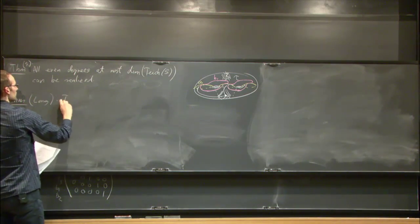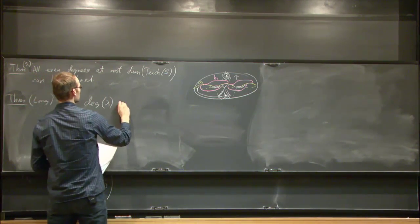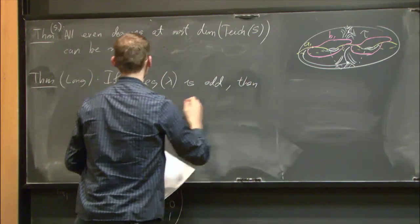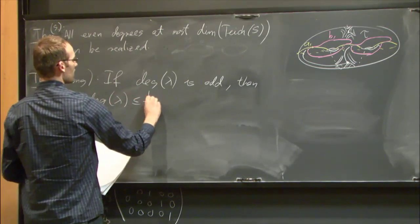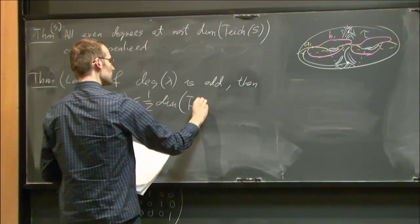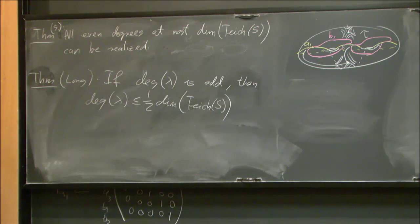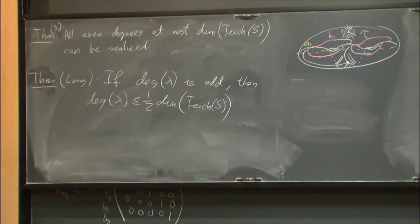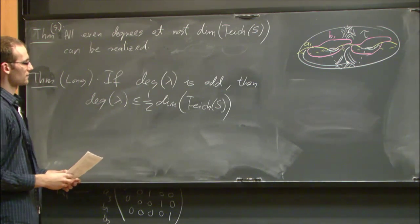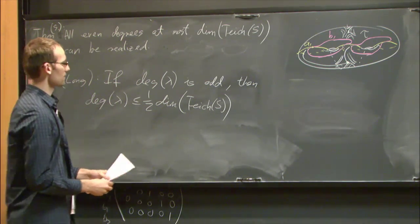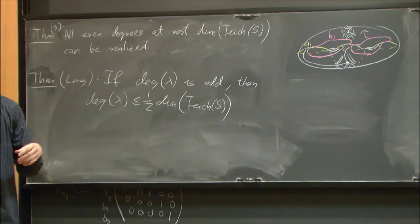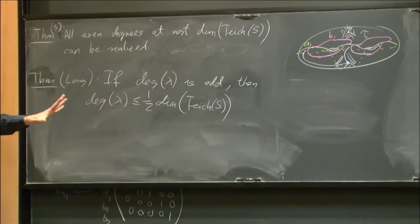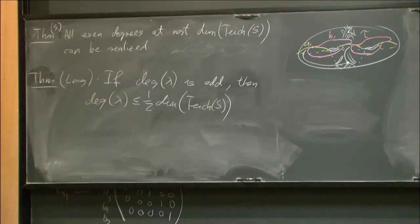A result due to Long says that if the degree of lambda is odd, then the degree is at most half the dimension of the Teichmüller space — this applies also to surfaces with punctures but for orientable surfaces. The basic idea is that if the degree is odd, then lambda and 1/lambda are not Galois conjugates, so lambda and 1/lambda have different minimal polynomials, and that causes the degree to be at most half the possible maximum.